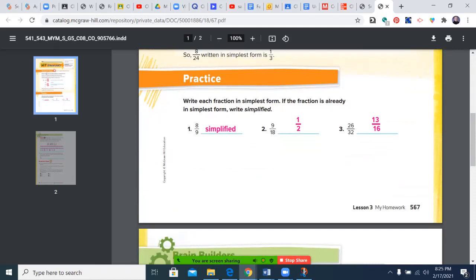Nine eighteenths. This one is going to be one, three, and nine. This one, two, three, six, nine, and eighteen. So nine is the greatest common factor. Nine divided by nine is one, eighteen divided by nine is two. Twenty-six thirty-seconds: I could start by dividing top and bottom by two, which gave me thirteen sixteenths.